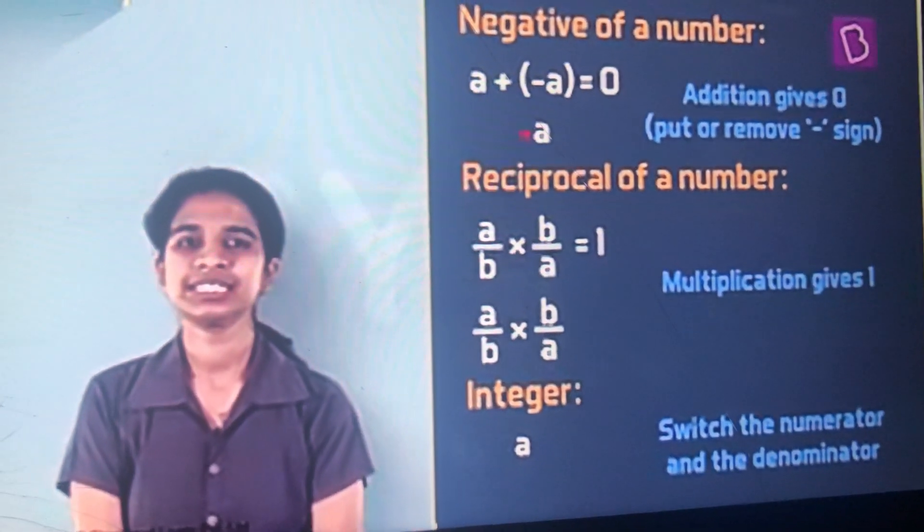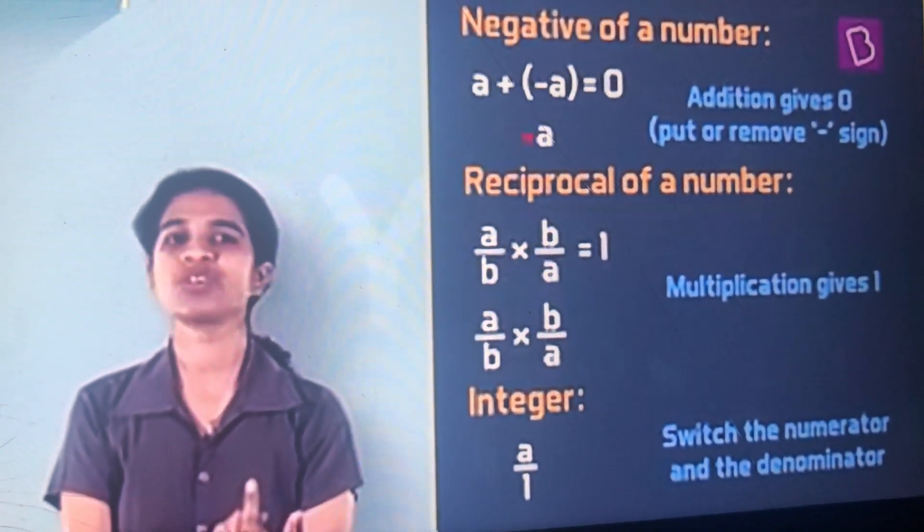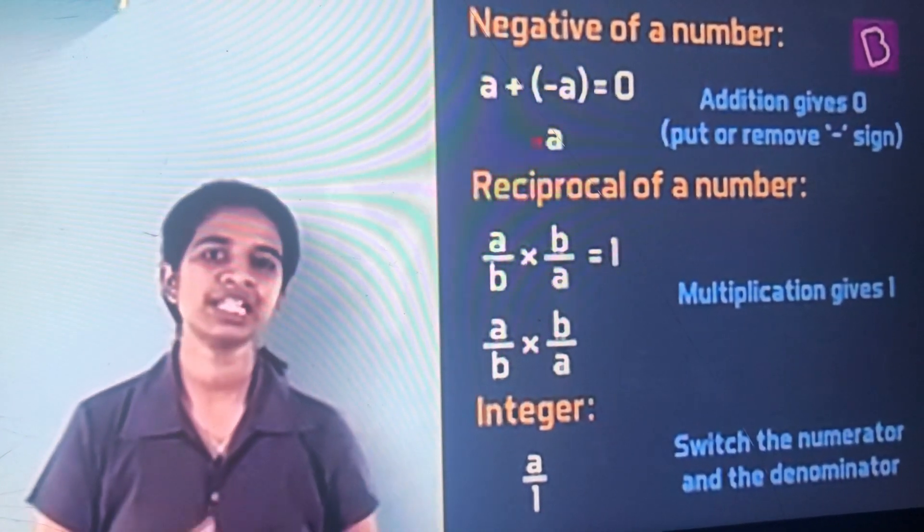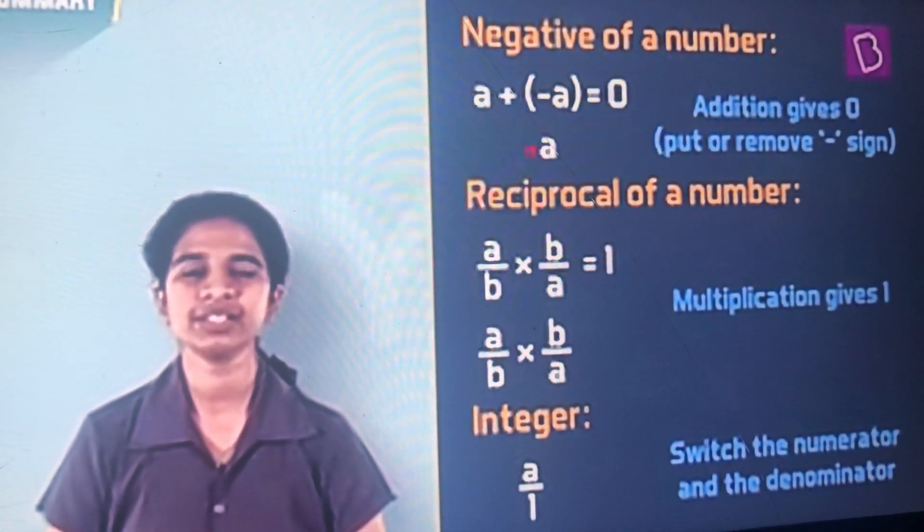what will the denominator be? It is 1, right? We don't write the denominator because it is 1. So if you have integers, you will take the denominator as 1 and then you can very easily find the reciprocal.